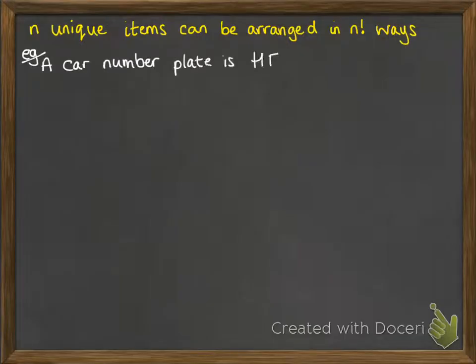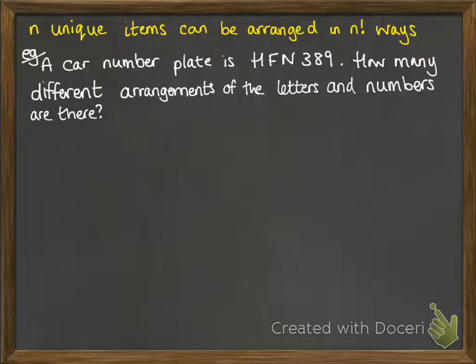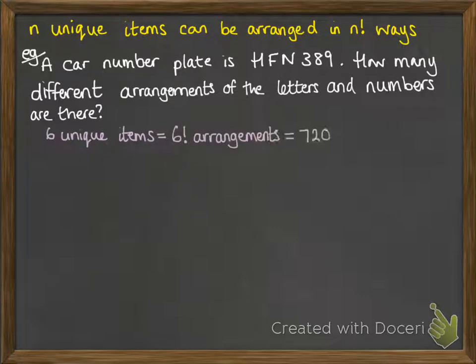So for example, we've got this car number plate that's HFN 389, and we want to work out how many different arrangements there could be of all of the letters and the numbers. So there are six unique items, that means that we can do it in six factorial different arrangements. That would give us 720. Now you can start to see why we want to use this factorial notation. We wouldn't want to list all of those possibilities—we'd end up with 720 different things listed. So we can use our six factorial to help us get there faster.